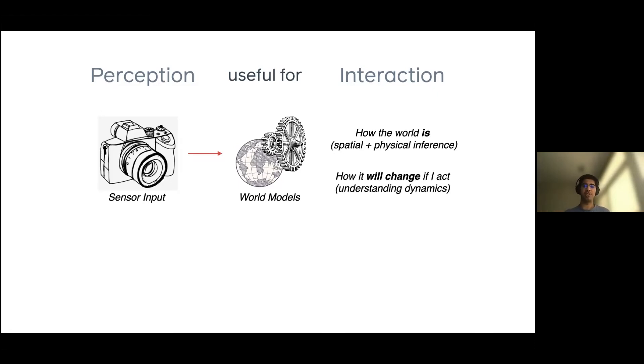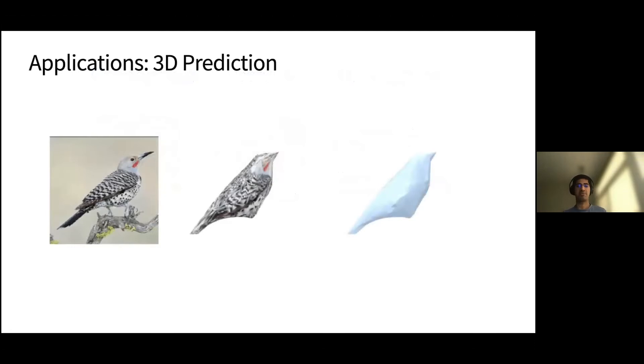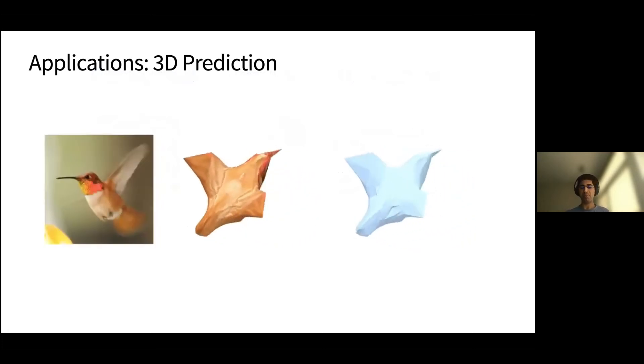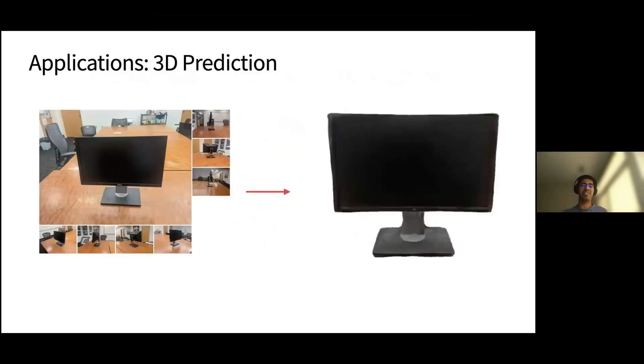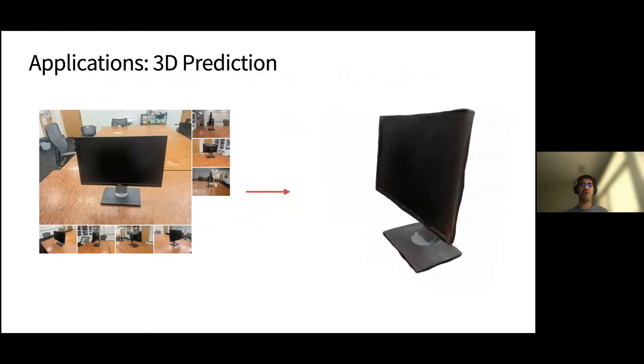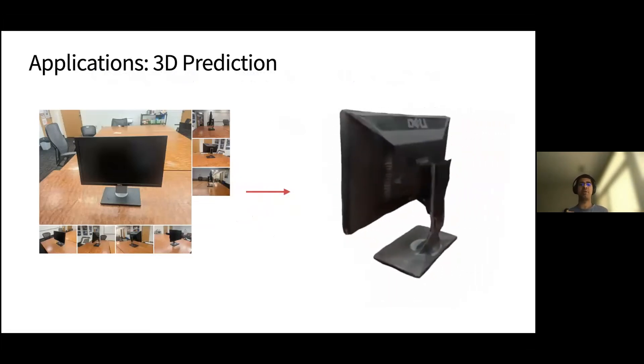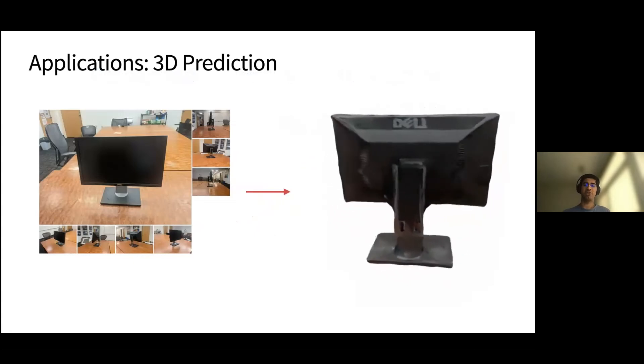And just as a couple of examples to show you, the systems that we've built can understand the 3D structure of objects that they're seeing. For example, can reconstruct these birds that you're seeing in 3D and also imagine the texture on them. And these systems can also improve as they see more and more views of an object. For example, given six or seven images of an object, they can reconstruct very precise high quality 3D models of what they're seeing.